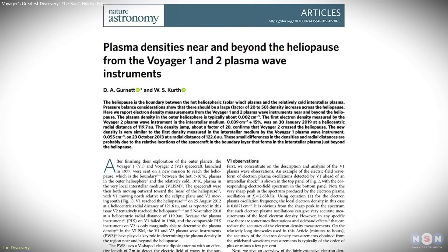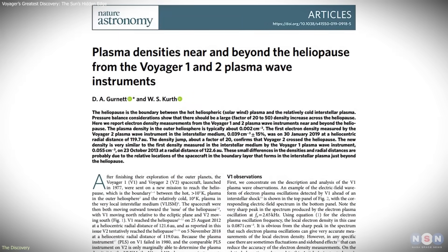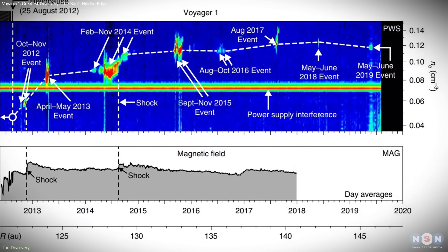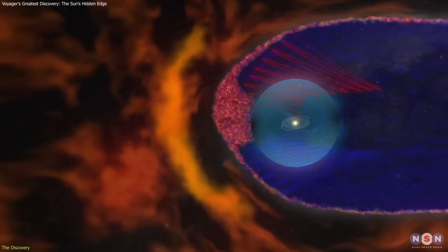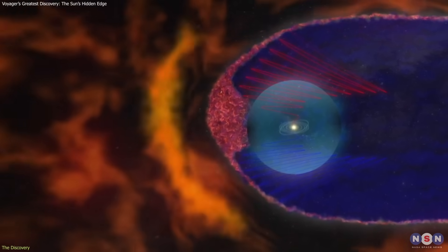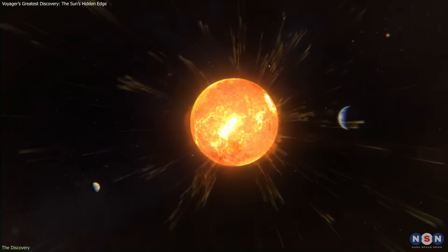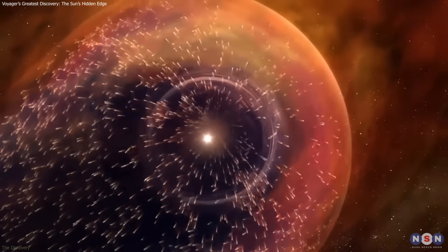The spacecraft simply glided through this turbulent frontier, gathering the first direct evidence of the Sun's outermost boundary. Their data confirmed that the edge of our solar system isn't a silent void. It's an active, energetic region shaped by pressure, plasma motion, and magnetic fields, a cosmic frontier that separates the familiar realm of the Sun from the interstellar sea beyond.